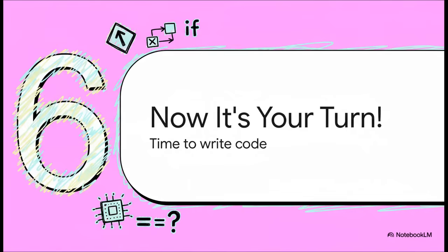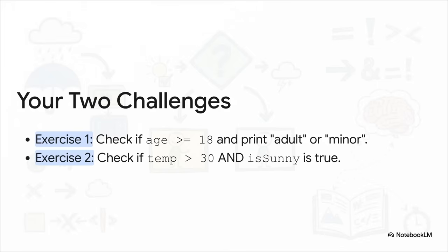Okay, that's all the theory we need for today. You now have the complete toolkit for teaching a computer how to think and make decisions. But listen, just watching this isn't enough. The only way this stuff is really going to stick is if you get your hands on the keyboard and actually try it yourself. So here are a couple of little challenges. First, I want you to write a bit of code that checks an age and prints out whether the person is an adult or minor. Simple enough, right?